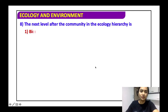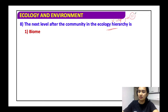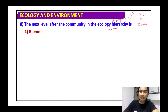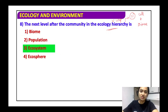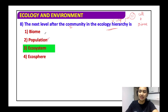The ecological hierarchy is very important — you need to know the order. After community comes ecosystem. From the options, population comes first, then community is formed from population, then ecosystem, then ecosphere, and ecosphere makes the entire biosphere. The functional unit of the biosphere is the ecosystem.